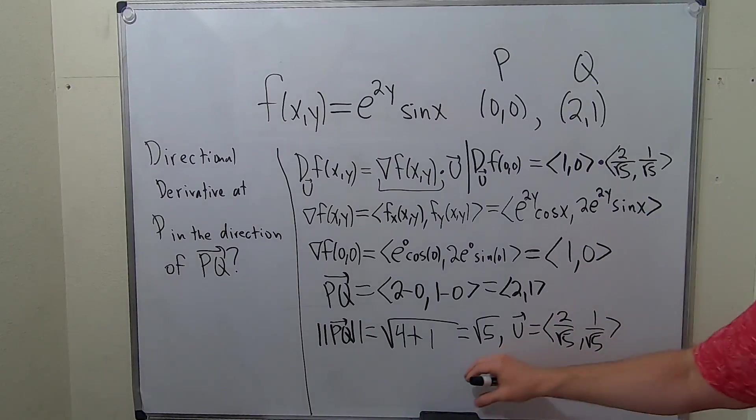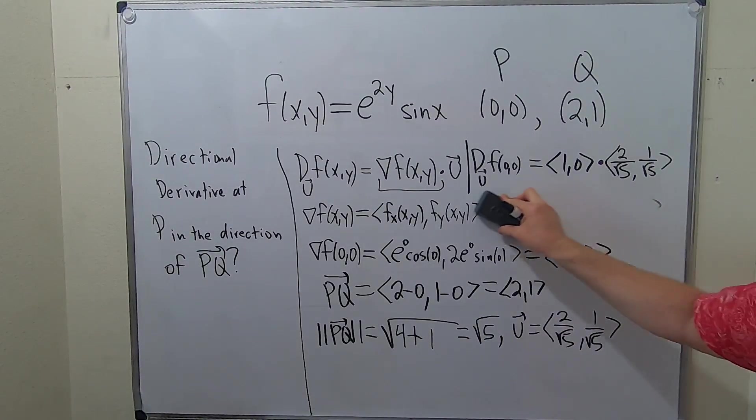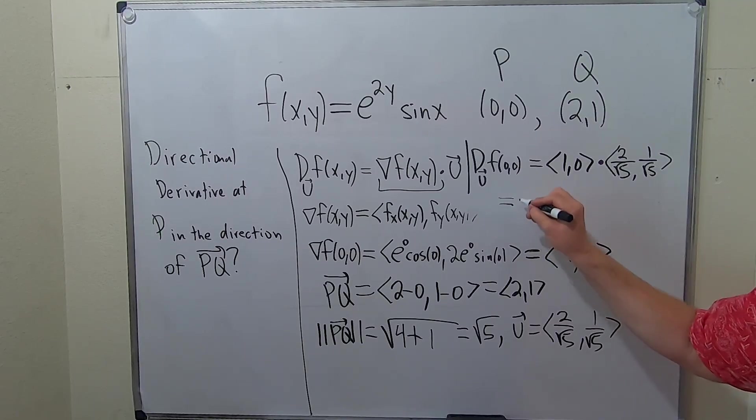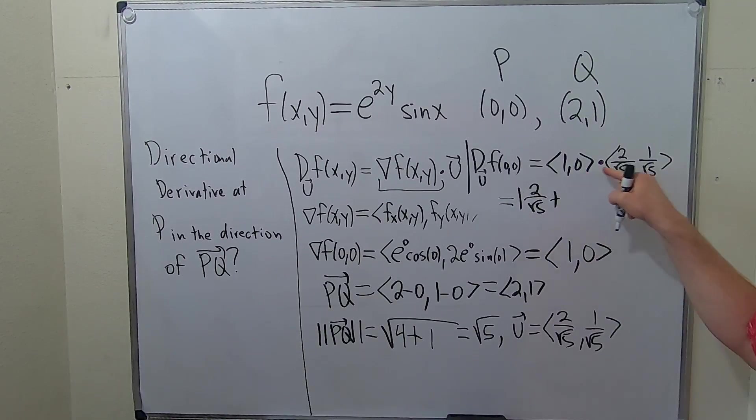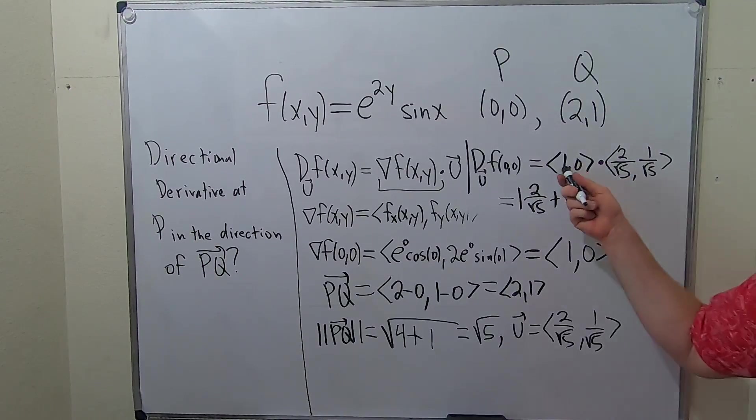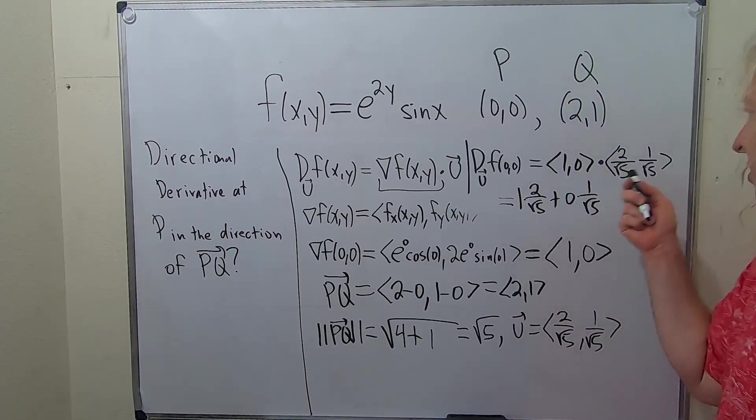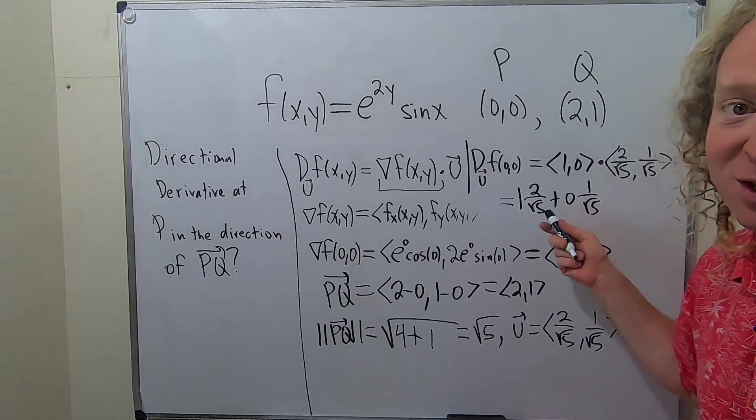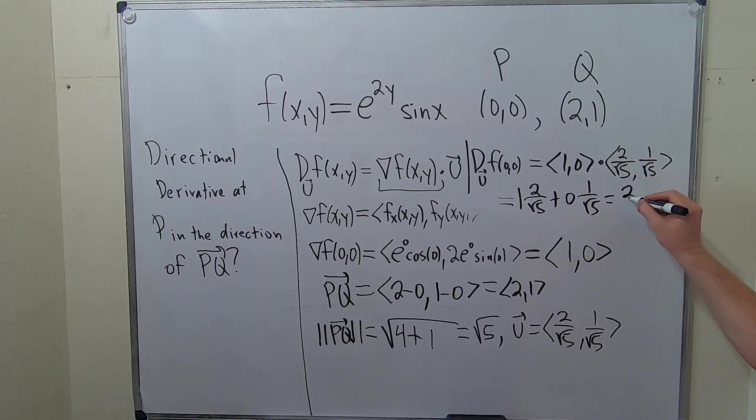When you take this dot product, I'm going to erase this piece here so you can see. You multiply the components and you add. So, it's 1 times 2 over root 5 plus 0 times 1 over root 5. It's this times this plus this times this. These cancel because this cancels. It's 0. 0 times a number is 0. So, this is just 2 over root 5.